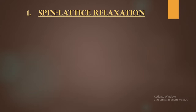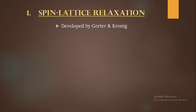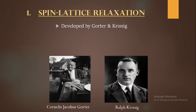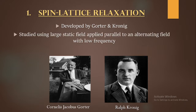This spin-lattice relaxation time is denoted as tau-1, which we have already seen in our previous class. Our main aim is to derive the phenomenological equation corresponding to spin-lattice relaxation. Spin-lattice relaxation was first developed by Gorter and Kronig, two very well-known names in the field of magnetism, who studied the sample using a relatively large static field.